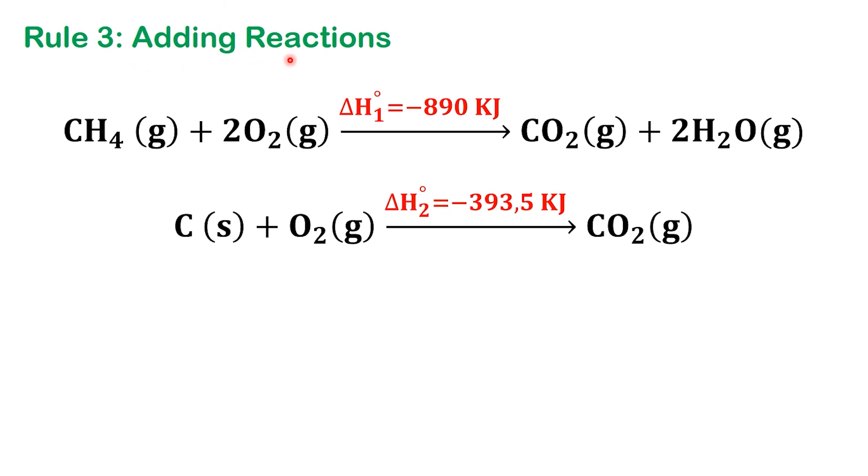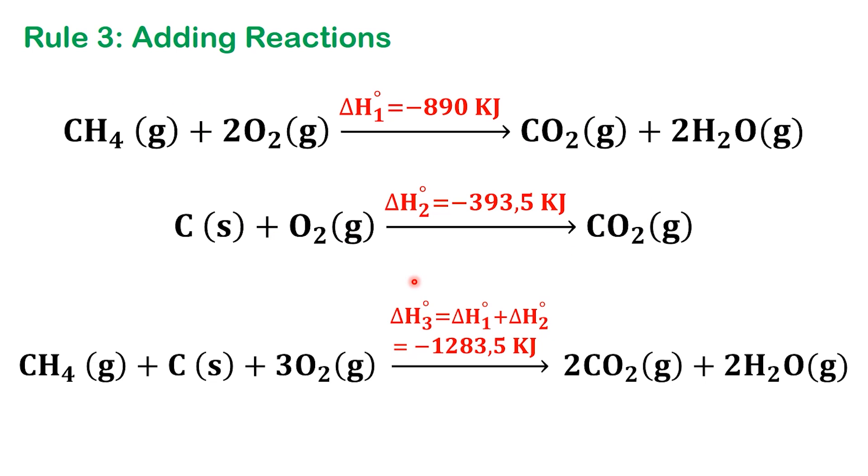When we add two or more chemical reactions together, we simply add their enthalpy changes as well. This is the essence of Hess's Law. Here's a quick example. Let's take two reactions. If we add the first reaction and the second reaction, the total enthalpy change is delta H equals minus 1283.5 kJ.